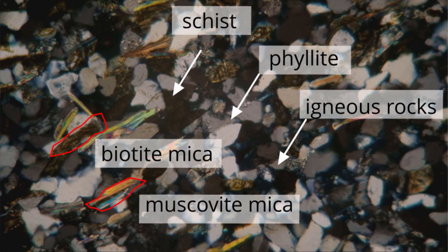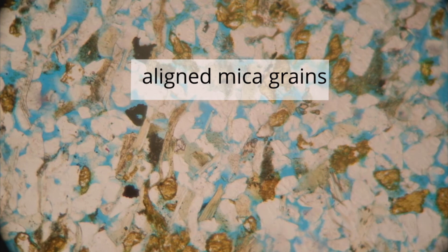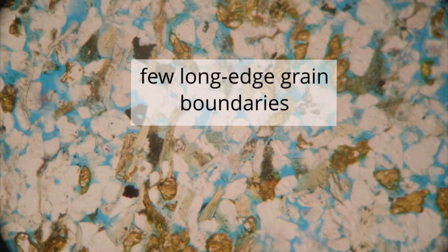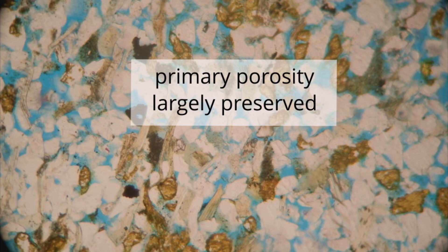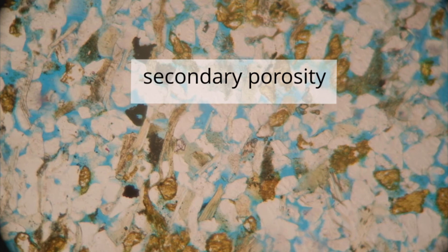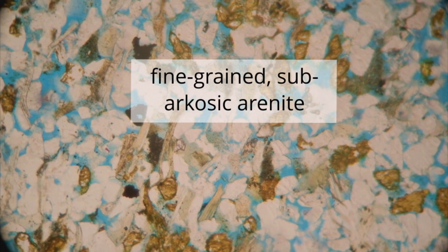It is worth noting that the muscovite and biotite micrograins, mostly derived from metamorphic rocks like schist and phyllite and many igneous rocks too, also suggest a range of sediment sources. The aligned micrograins forming layers through the sedimentary rock indicate sorting by grain shape during deposition of the original sediment. The point contact and few long edge grain boundaries with no deformation of elongate grains around the subspherical grains indicates little or no compaction. Primary porosity has been largely preserved, and oversized pores indicate secondary porosity caused by dissolution of feldspar grains. This rock is a sandstone that may be described as a fine-grained subarkosic arenite.